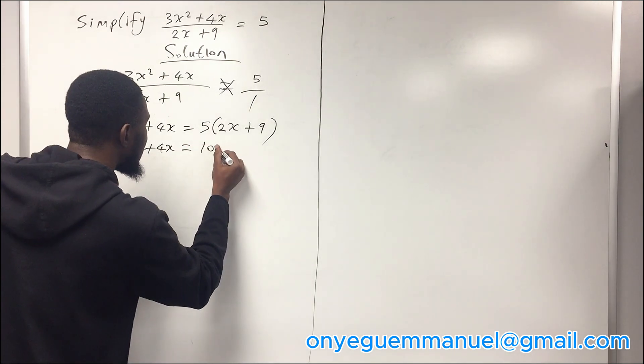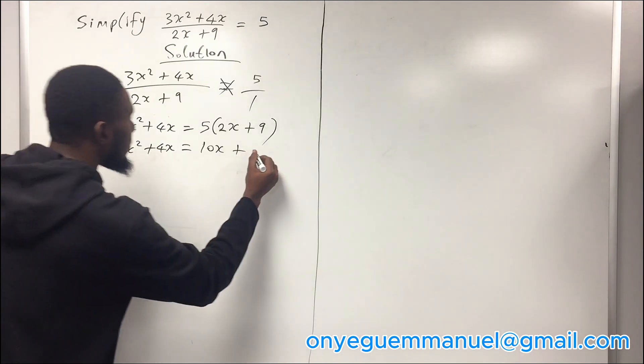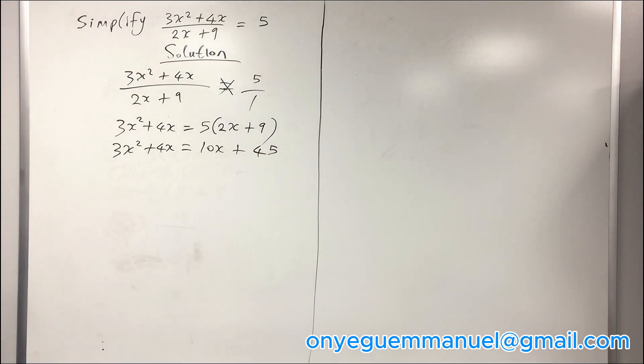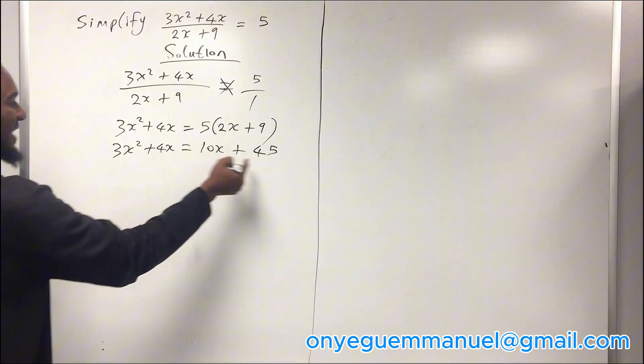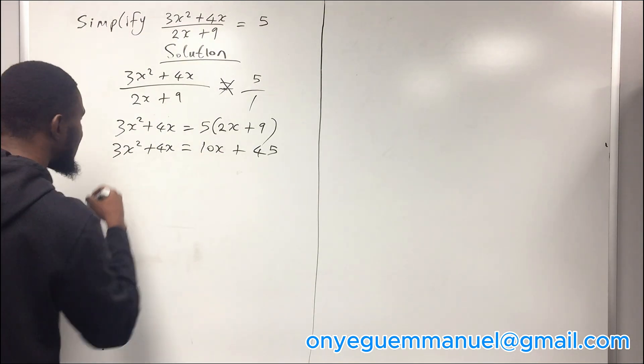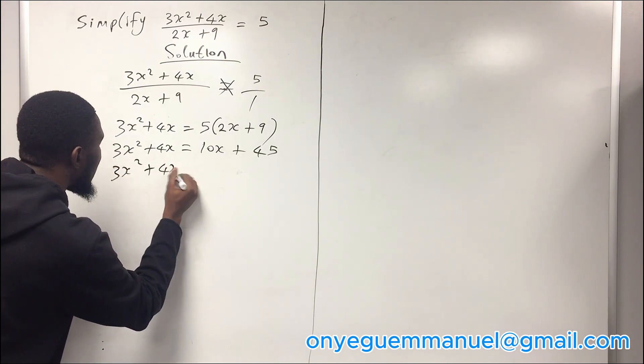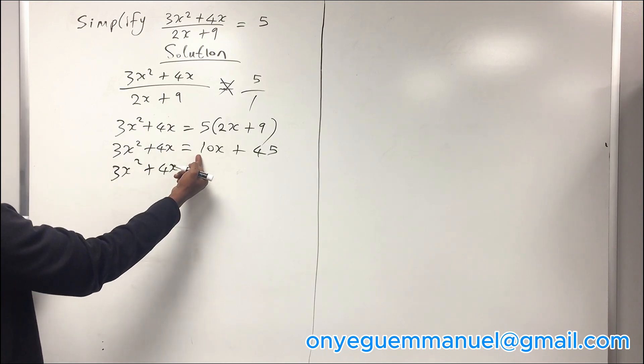Here we have 3x squared plus 4x equals 5 times 2x will give you 10x, 5 times 9 will give you 45. Now you bring this 10x and 45 to the other side.